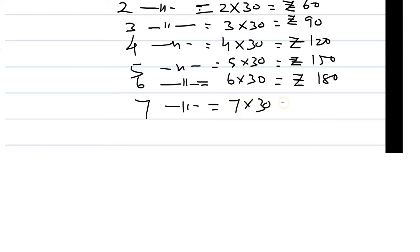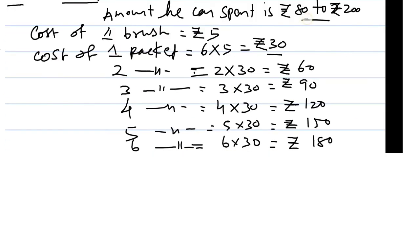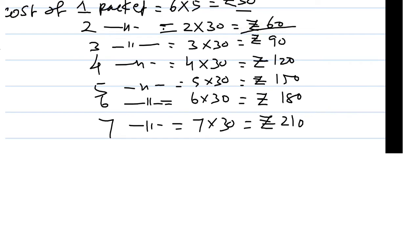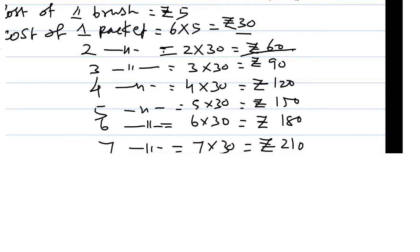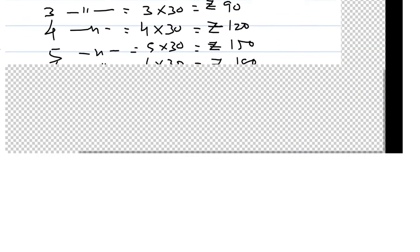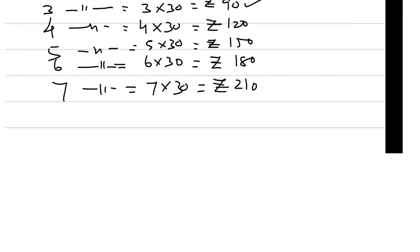The available fund is rupees 80 to 200. So 60 rupees is below 80, we skip that. 90 rupees is more than 80 and within 200, so it qualifies. The valid amounts within the range of 80 to 200 are: 90, 120, 150, and 180.